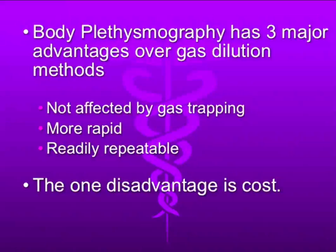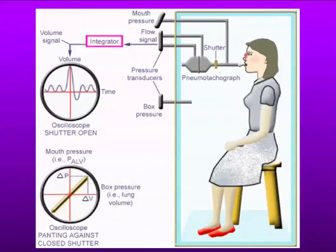The biggest disadvantage is cost. However, that is becoming less of a disadvantage today as prices have come down, more people are using it, and demand has increased. Patient care and getting accurate results is even more important than cost. This picture shows how the body box works — the relationship of volume and pressure. There are pressure transducers, flow transducers, and a pneumotachograph that measures all those things and captures the relationship of pressure and volume changes.